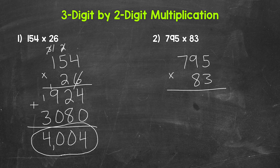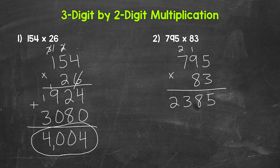We'll start with three times five — that's 15, carry the one. Then we have three times nine, which is 27, plus one is 28. Carry the two. And then we have three times seven, which is 21, plus two is 23. We are done with this three, done with this one, and done with this two.